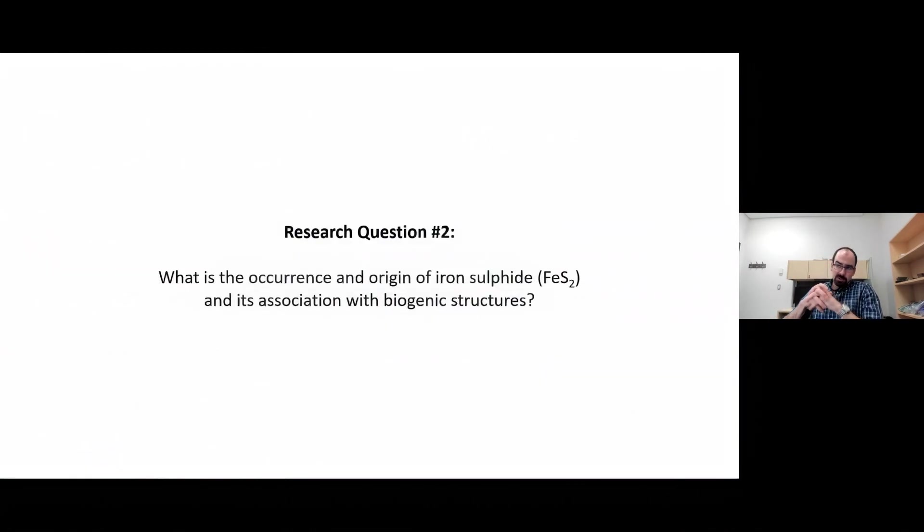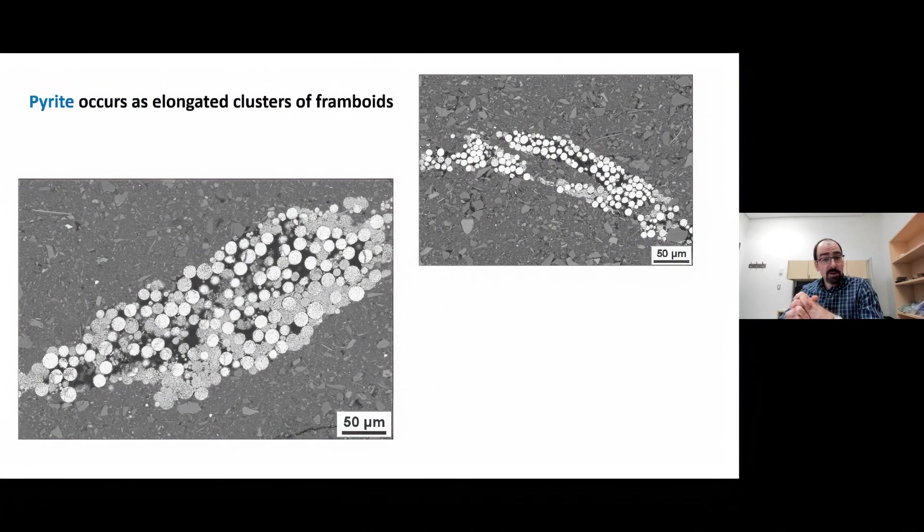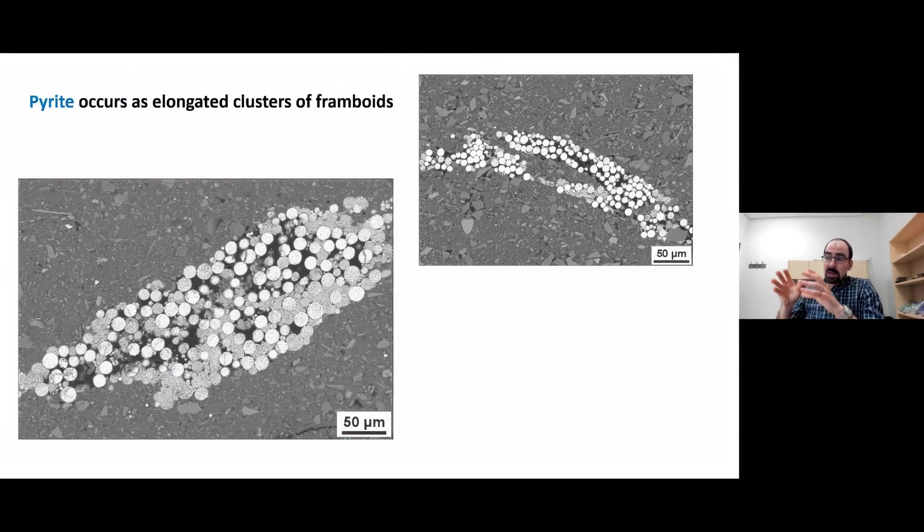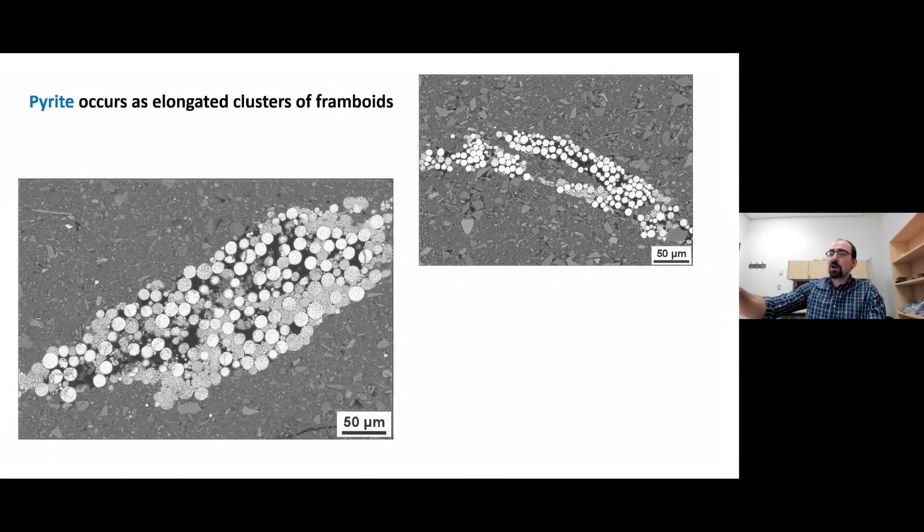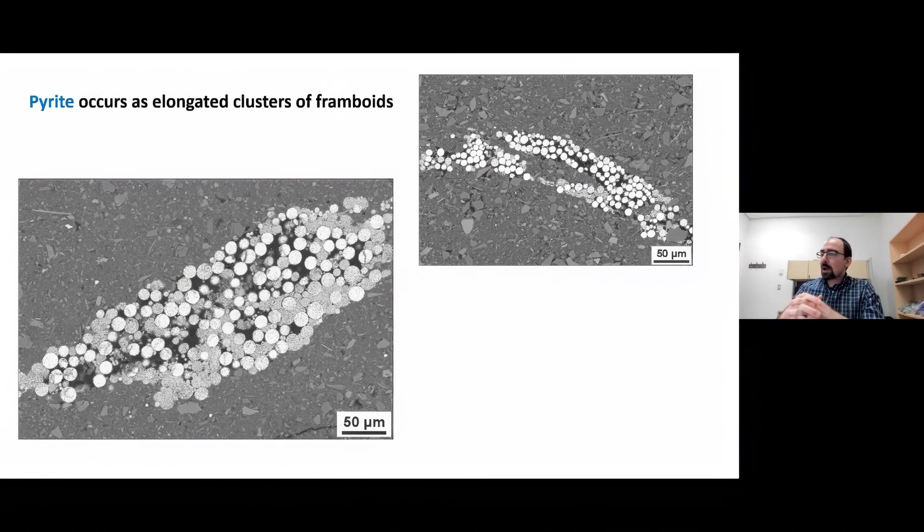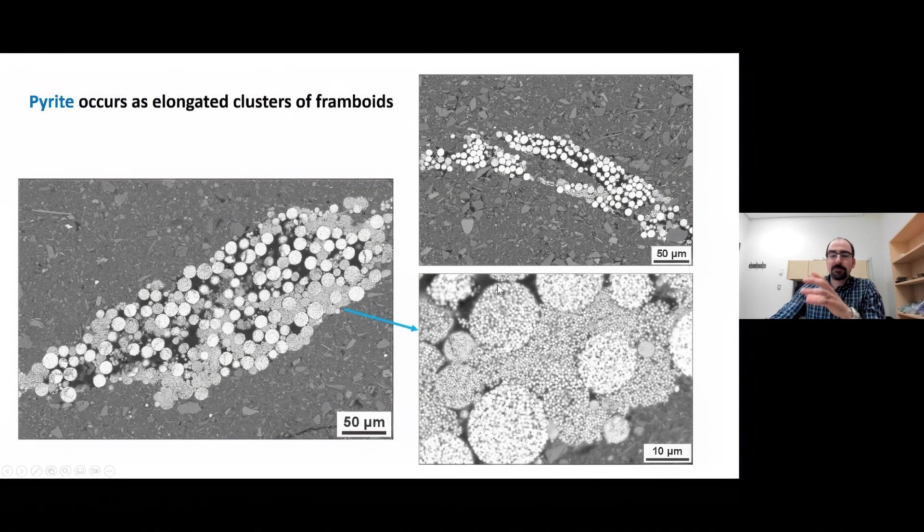The second research question I want to address is: what is the occurrence and origin of iron sulfide minerals, and what is the association of these minerals with biogenic structures? Iron sulfide takes the form of pyrite, mostly pyrite in the succession. The pyrite occurs in a crystalline form in a number of different occurrences. The first, and this is the most commonly occurring form of pyrite, is in the form of elongated clusters of framboids. Both of these SEM micrographs show elongated voids that have been infilled with framboidal pyrite. The pyrite framboids are typically on the order of about 5 to 15 micrometers.